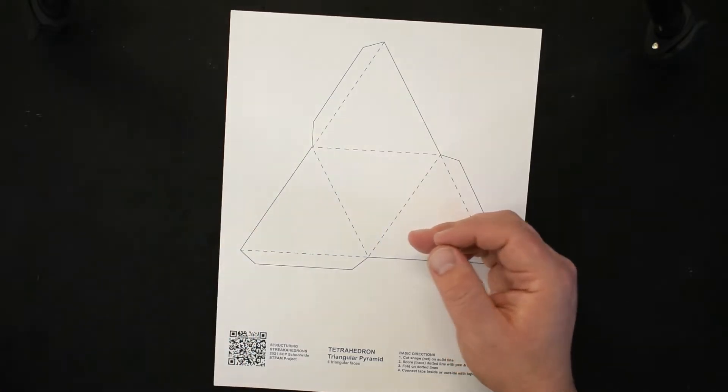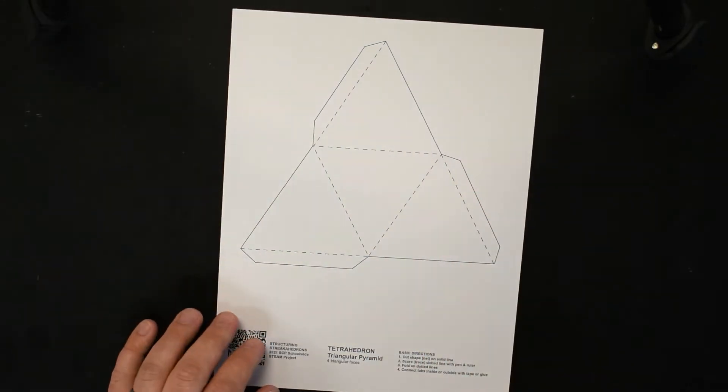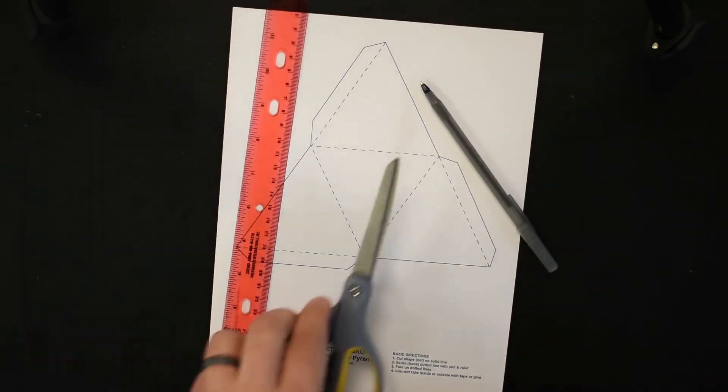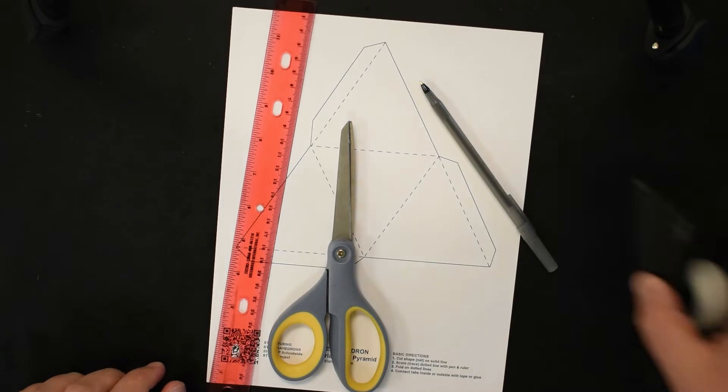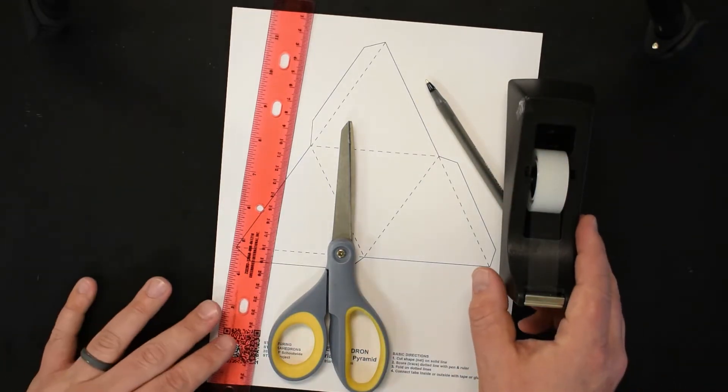To do that, you're going to need this pattern that came in the kit, a pen, ruler, a pair of scissors, and some tape or glue. All of this was provided in the kit.